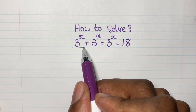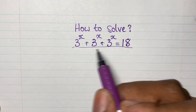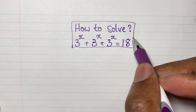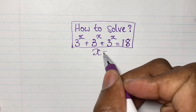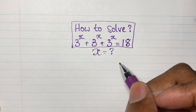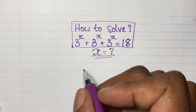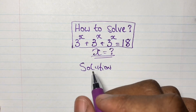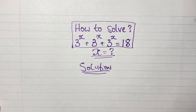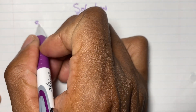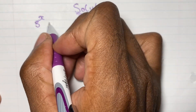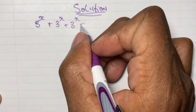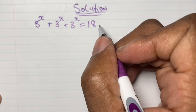Greetings again everyone, welcome back to my channel. Here we have another algebraic equation that we are going to solve, where we have 3 to the power of x plus 3 to the power of x plus 3 to the power of x is equal to 18, and we are given to solve x. You can choose to pause this video at any time to see if you can solve this, but if not, I'm going to go ahead and write my solution down below. You can also feel free to check out my other math videos on how to solve other algebraic exponential equations.